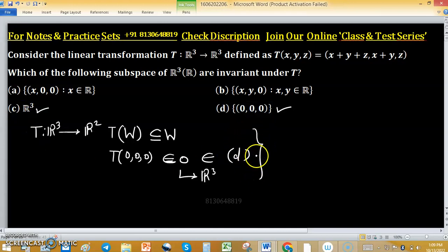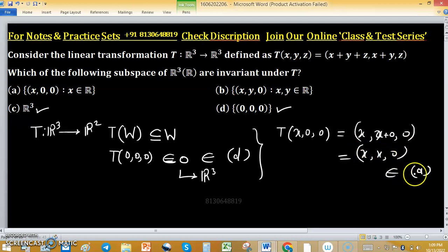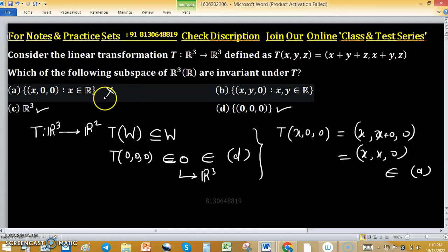Now we have to check option A and option B. Option A is saying, take arbitrary element of subspace in option A. So x, 0, 0, this is an arbitrary element. Apply T, it will be x, 0, x plus 0, 0 means x, x, 0. This not belongs to option A. So option A is not T invariant.